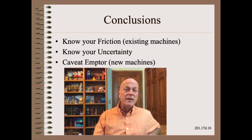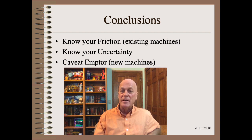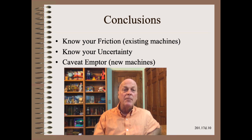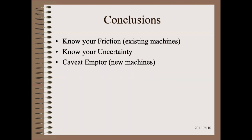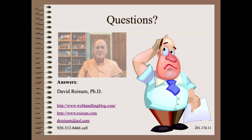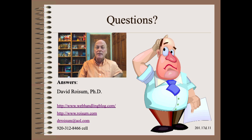In conclusion, if you own a machine, you must know the amount of friction and uncertainty you have in the control systems by actually measuring it. If you are buying a machine, you may want to consider putting a maximum friction requirement into the purchasing spec. Thank you so very much for watching this module in my Plant Practical series. Please stay tuned for more web machine and web handling topics. Let me know what you would like to hear about in the comments below, and please like and share if you found something here to be interesting or useful.